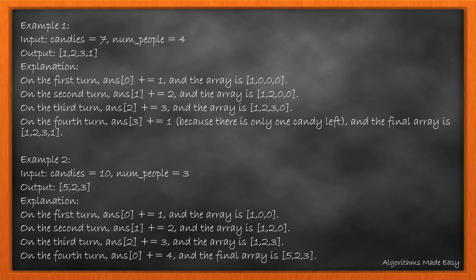3 to the 3rd, but as we come to the 4th person, we're left with just 1 candy. However, we were supposed to give them 4. Since there aren't enough candies left, we give them all remaining candies, which is 1.